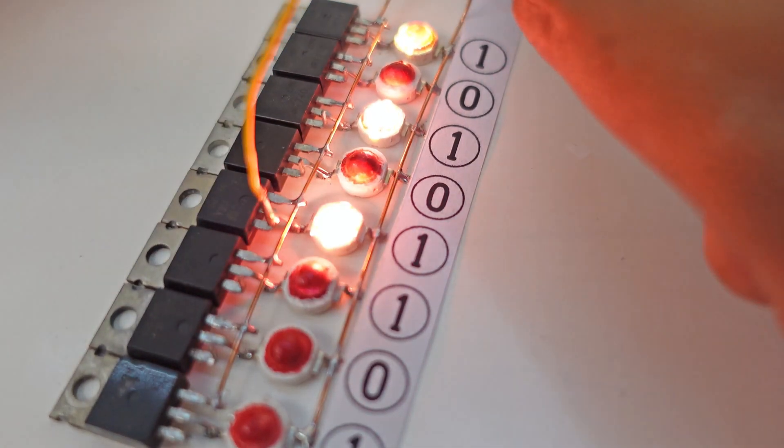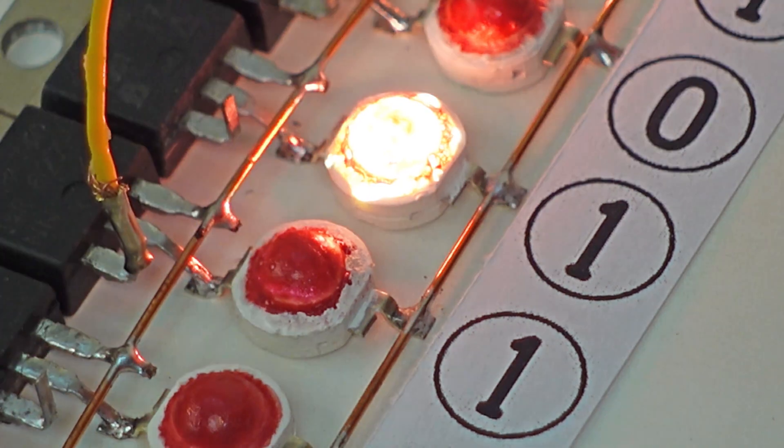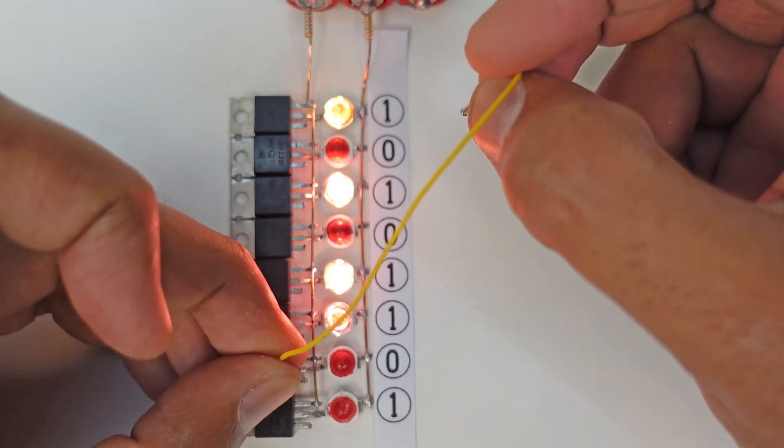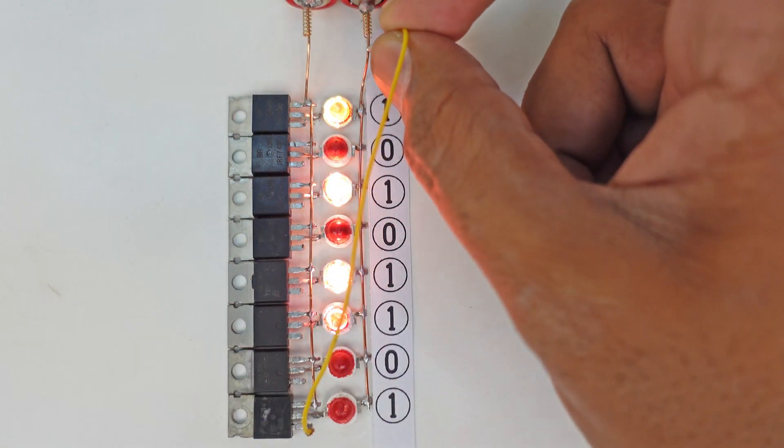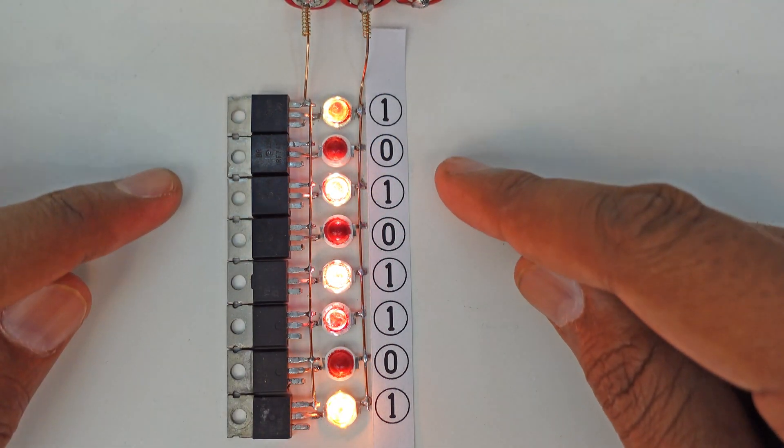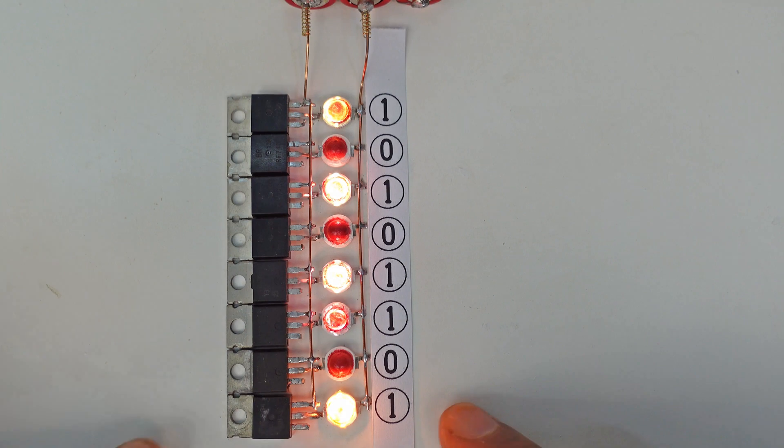The fifth bit is also one. The sixth bit is also one. The seventh bit is zero. And the eighth bit is also one. We have successfully saved our one byte data in this flash memory.